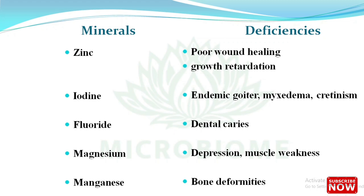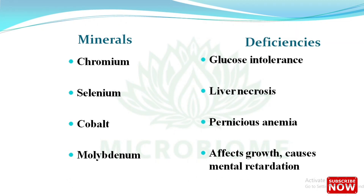Manganese deficiency causes bone deformities. Chromium deficiency causes glucose intolerance. Selenium deficiency symptom is liver necrosis. Cobalt deficiency causes pernicious anemia. Molybdenum deficiency affects growth and causes mental retardation.